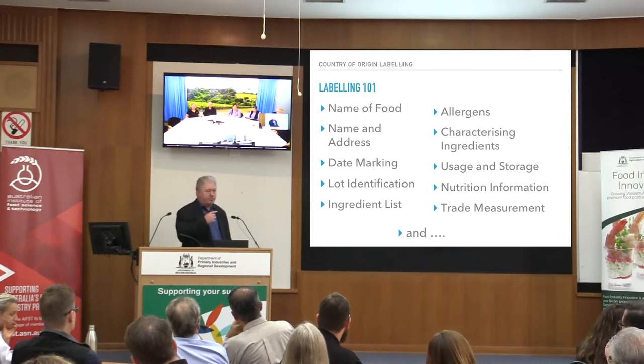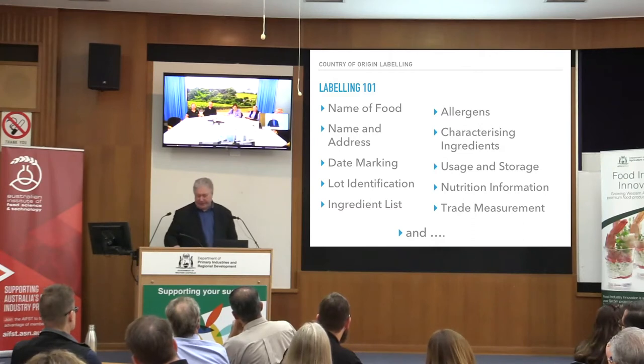Why do we have lot IDs? Traceability — absolutely. The ingredients list: the hard-working part of the label. There are not too many issues with ingredients lists nowadays. Just a reminder though, there is a proposal at FSANZ at the moment for what's called PEEL — plain English allergen labelling — that may affect how you declare allergens in your ingredients list. So watch this space on allergen declarations.